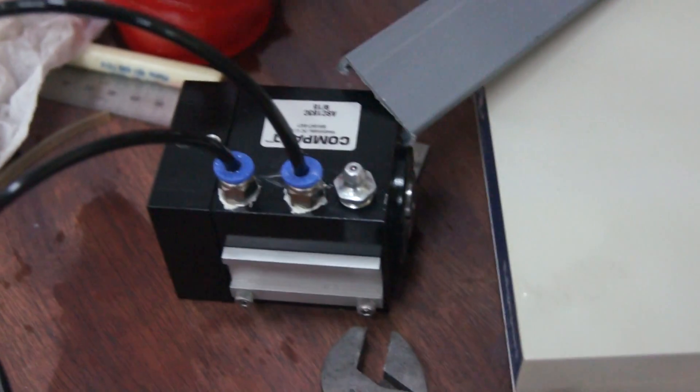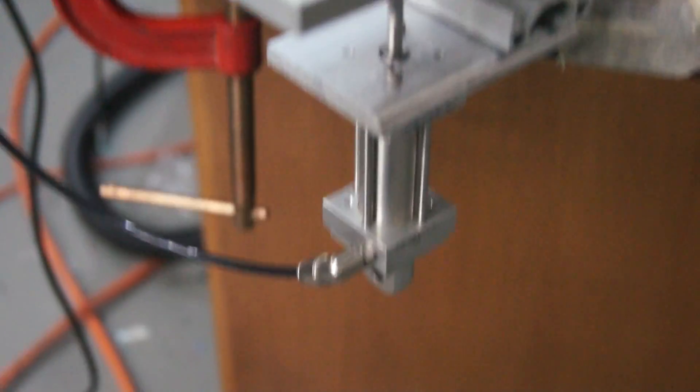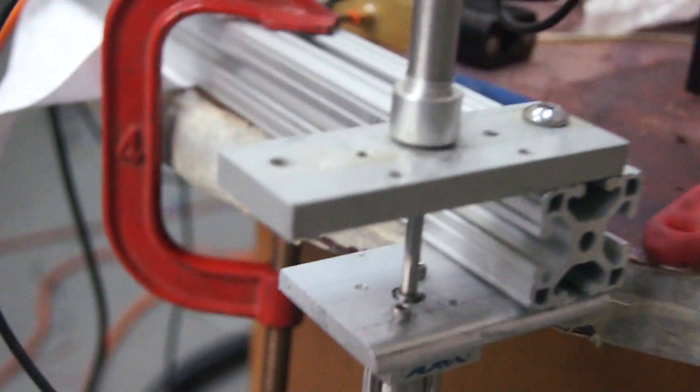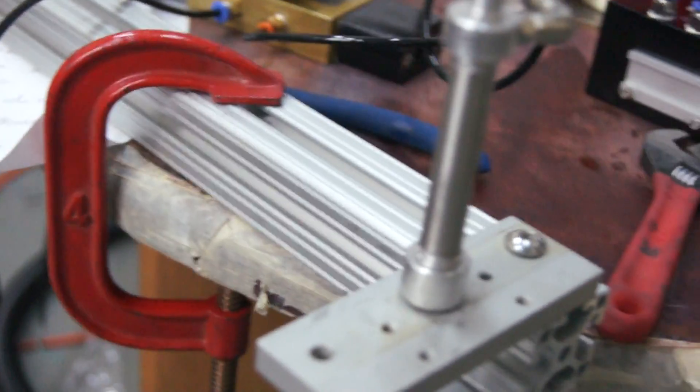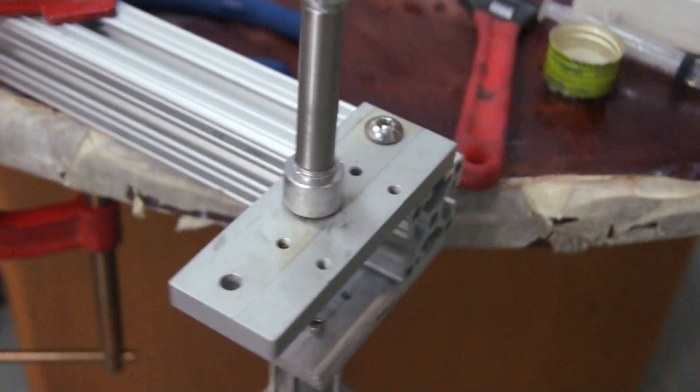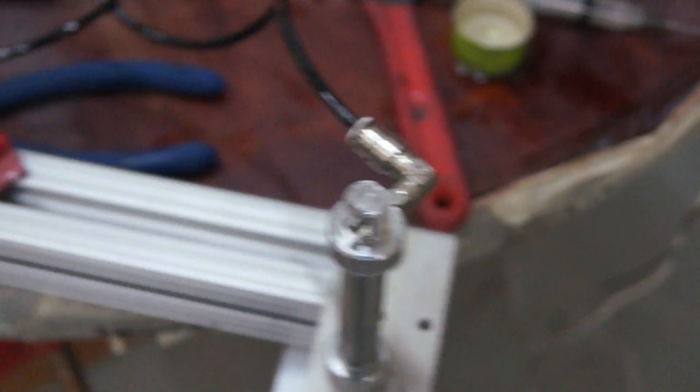This valve directs air to the reverse side of the collet closer and the large piston in the pressure intensifier. The large piston is directly coupled to the piston of the small cylinder. The small cylinder is filled with hydraulic fluid, in this case extra virgin olive oil.